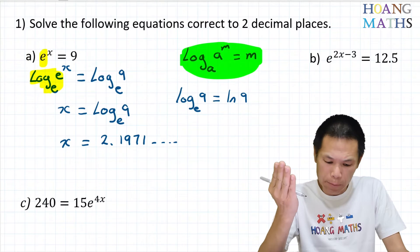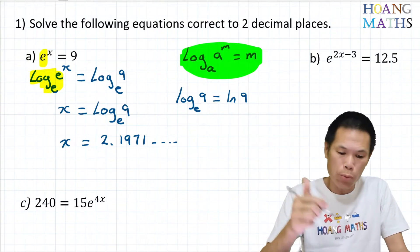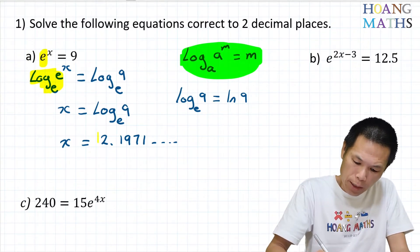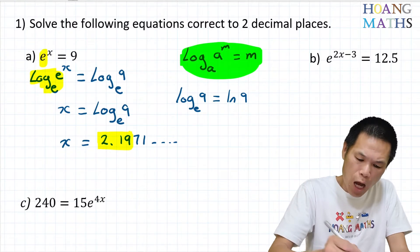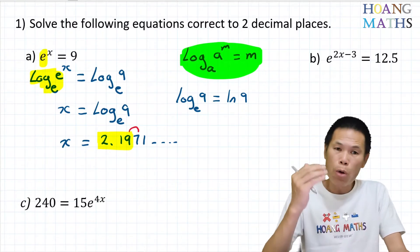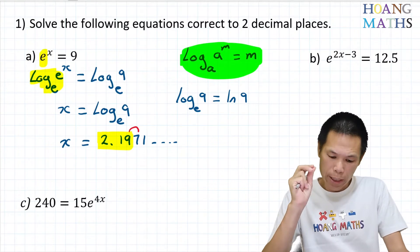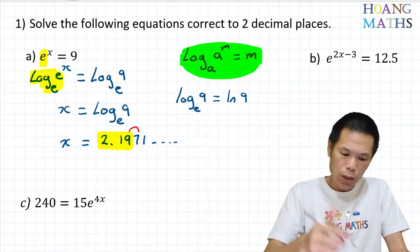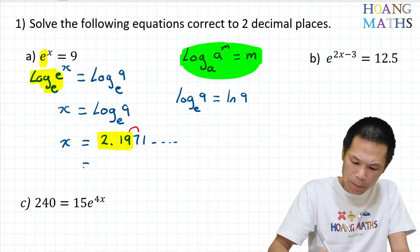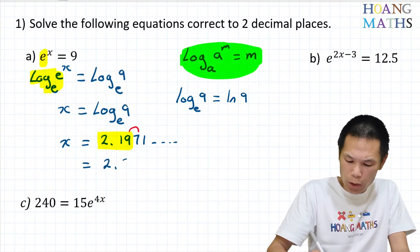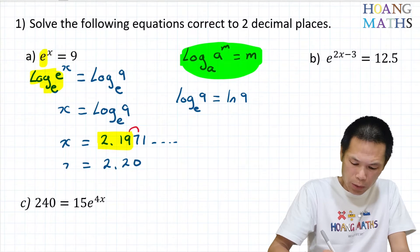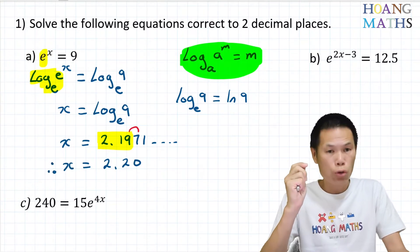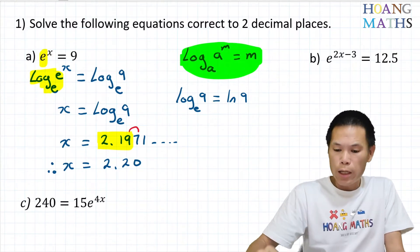We need to correct to two decimal places. Two decimal places means two numbers after the decimal point — that is up to here. The number after nine is seven, which is more than five, so we need to add one to nine: nine plus one is ten, so the answer is x is equal to 2.20.